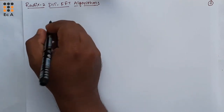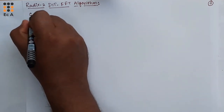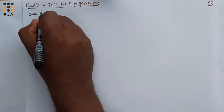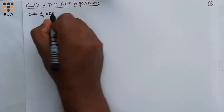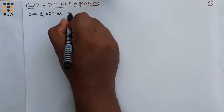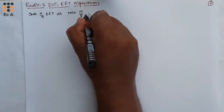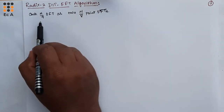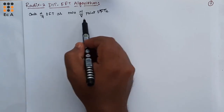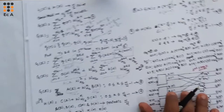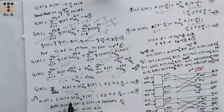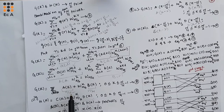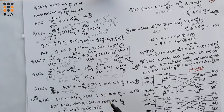Now let us continue the process of decimation. We can represent each N/4 DFT as 2 N/8 point DFTs. So in the previous lecture, we had decomposed the N/2 point DFT into N/4 point DFT. For this N/4 point DFT, we will decompose it into N/8 point DFT.